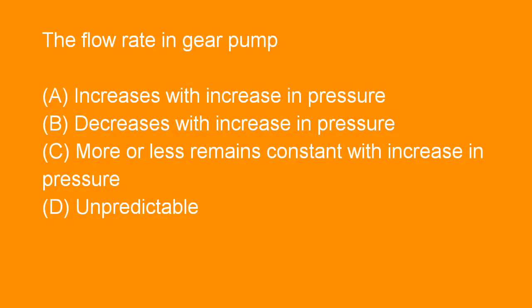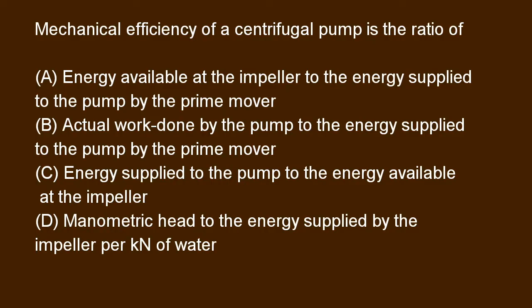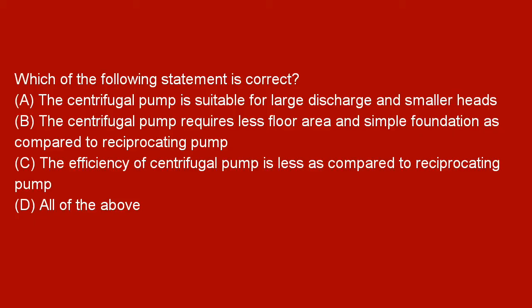Next question: The flow rate in a gear pump more or less remains constant with increase in pressure. Option C is right. Next question: Mechanical efficiency of a centrifugal pump is the ratio of energy available at the impeller to the energy supplied to the pump by the prime mover. Option A is right.